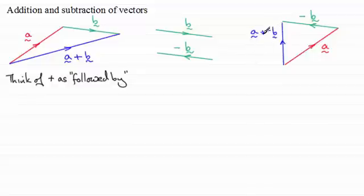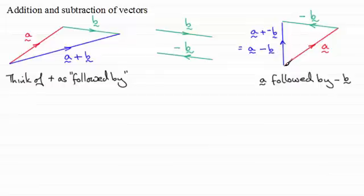But the plus minus is replaced by minus. So what we've got here is that this is exactly the same as the vector a minus the vector b. So we've got a followed by minus b.